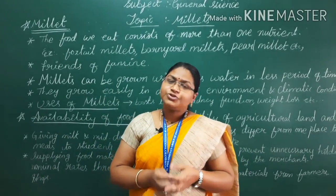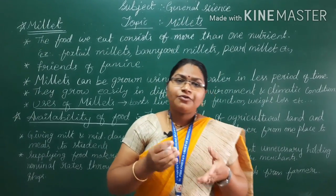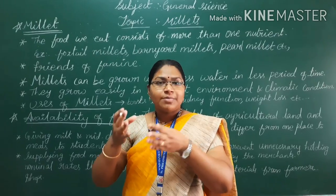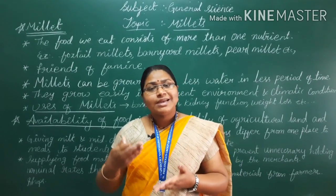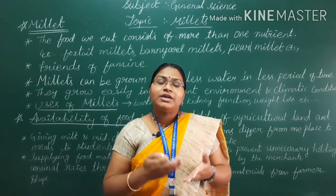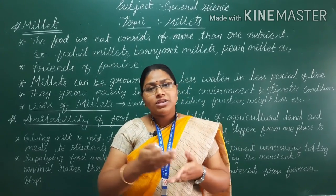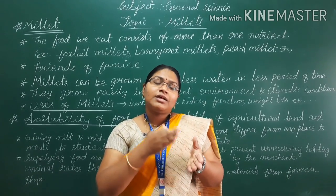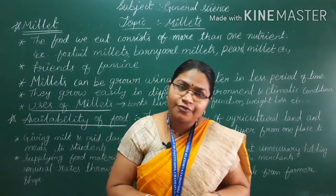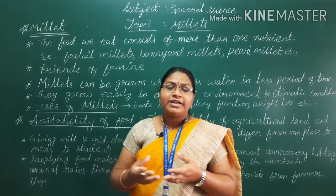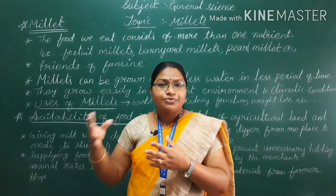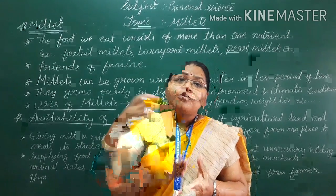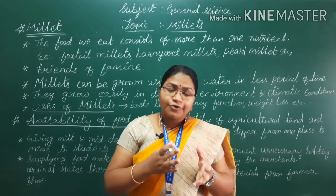Hello children, welcome to General Science class. Today our topic is millets. We have learned in previous classes that any food material contains nutrients — carbohydrates, fats, proteins, vitamins, and minerals. These are the main nutrients food consists of. Depending on the food material, different nutrients are present. For example, fruits give antioxidants and vitamins, and rice gives carbohydrates.